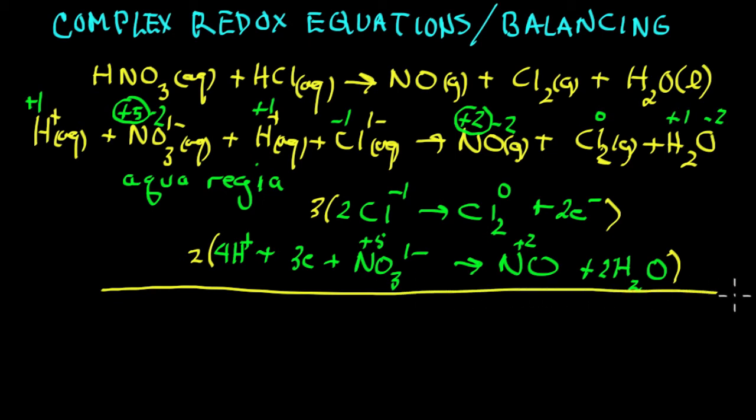Now let's put the whole thing together, add these equations up. Four times two is eight hydrogen ions and six electrons, two nitrate, three times two.